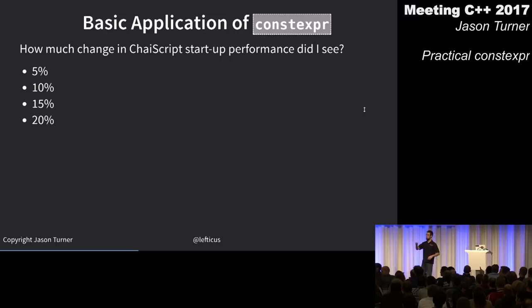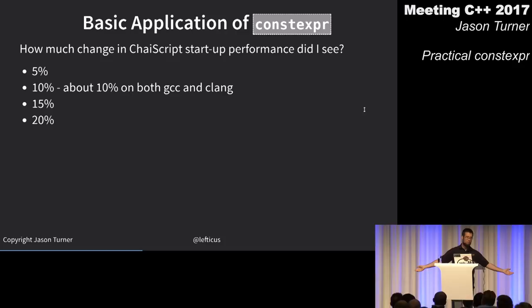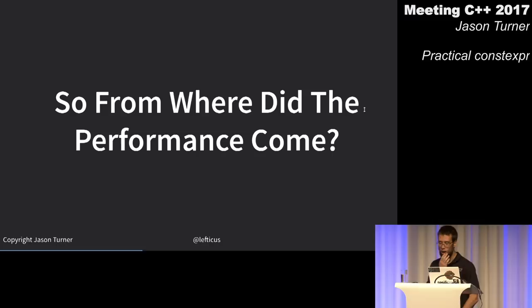The answer is 10% on both GCC and Clang. I needed to know where this performance came from — was it additive, with every little thing contributing a bit?